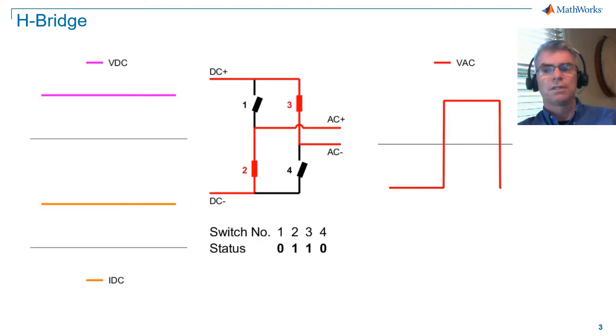In the animation, you can see that during positive conduction, the switches 1 and 4 conduct, and during the negative conduction, the switches 2 and 3 conduct. The AC waveform is a square wave that flips between plus VDC and minus VDC. Note that DC voltage and DC current remain constant from the switching pattern.